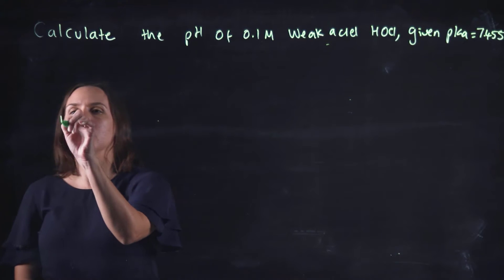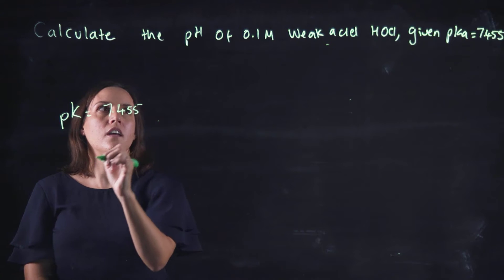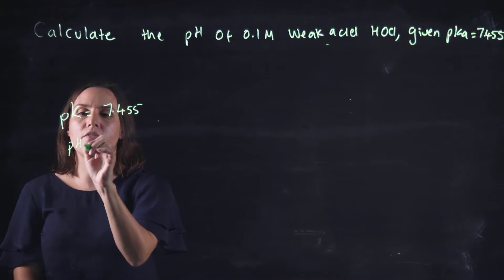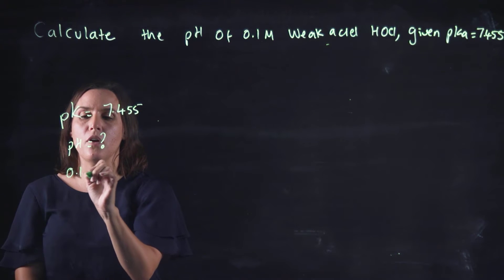So the pKa that we've got today equals 7.455. The pH is what we're trying to find out, and the initial concentration is 0.1 molar.